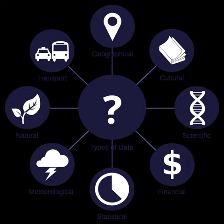Data processing commonly occurs by stages, and the output from one stage may be considered the input of the next stage. Field data is raw data that is collected in an uncontrolled environment. Experimental data is data that is generated within the context of a scientific investigation by observation and recording.